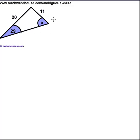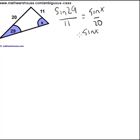So we can say that the sine of 29 over 11 equals the sine of X over 20. Let's just solve for sine of X and do a regular law of sines problem. Get our calculator out. The sine of 29 times 20 divided by 11 will give you 0.88147.